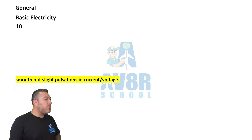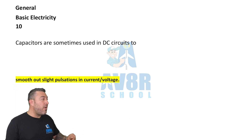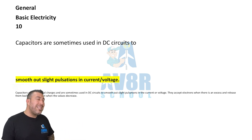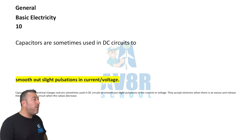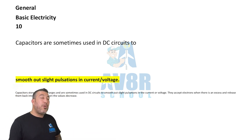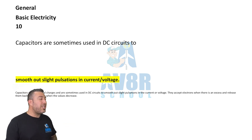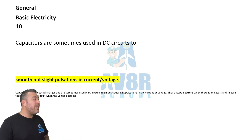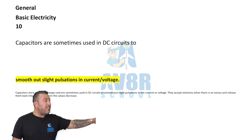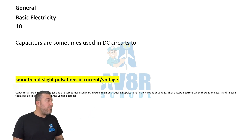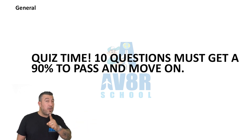Question number ten: capacitors are sometimes used in DC circuits to smooth out slight pulsations in current and voltage.